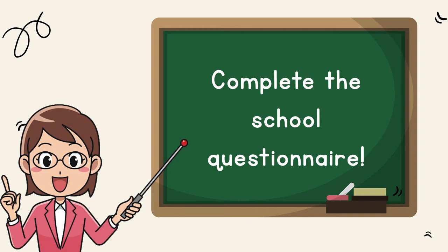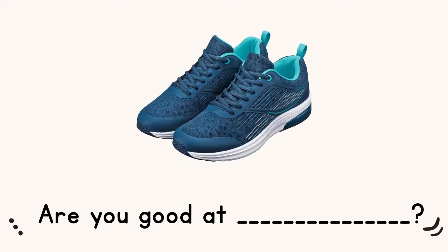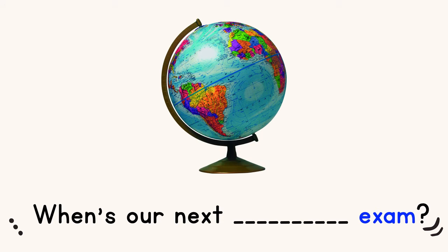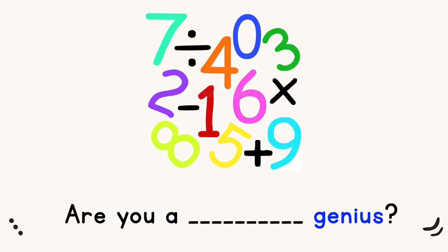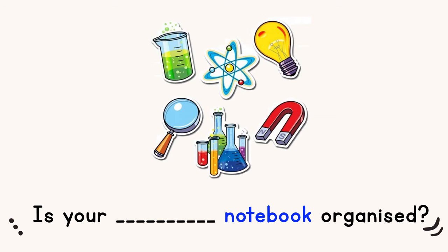Complete the school questionnaire. Are you good at? Which subjects do we usually wear trainers? Yes — PE, Physical Education. When's our next exam? Geography. Are you a genius? Yes — Math genius. Is your notebook organized? Which subject? Yes — Science notebook organized.